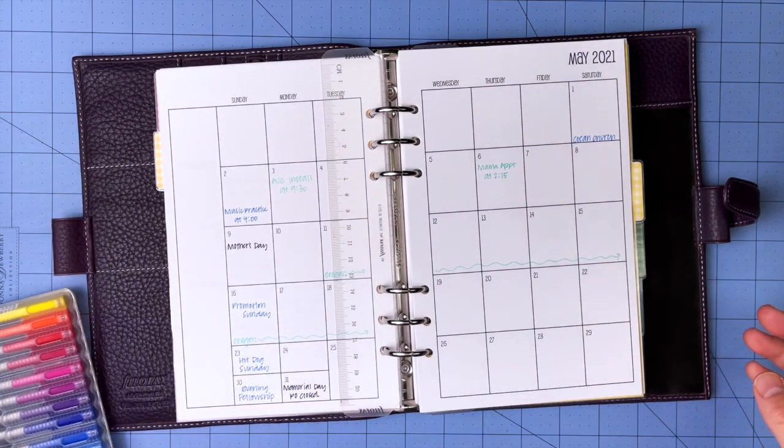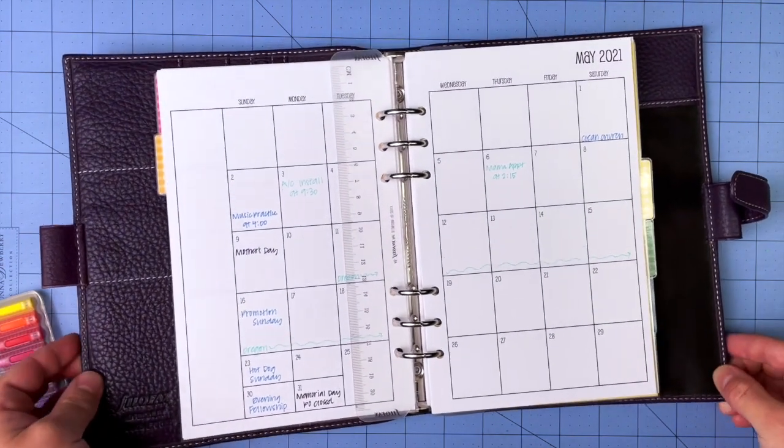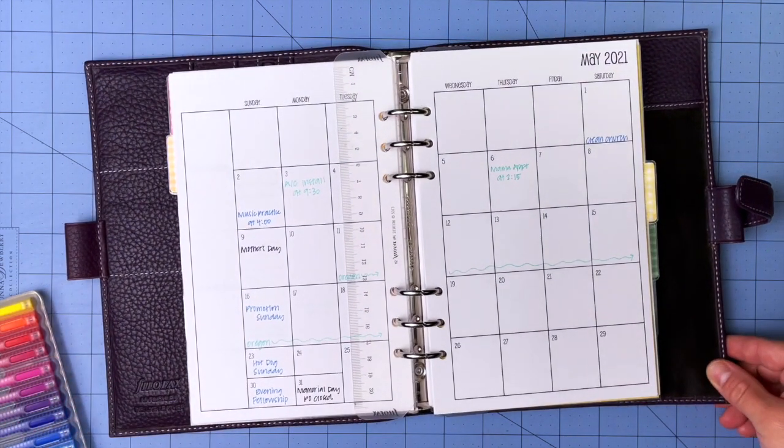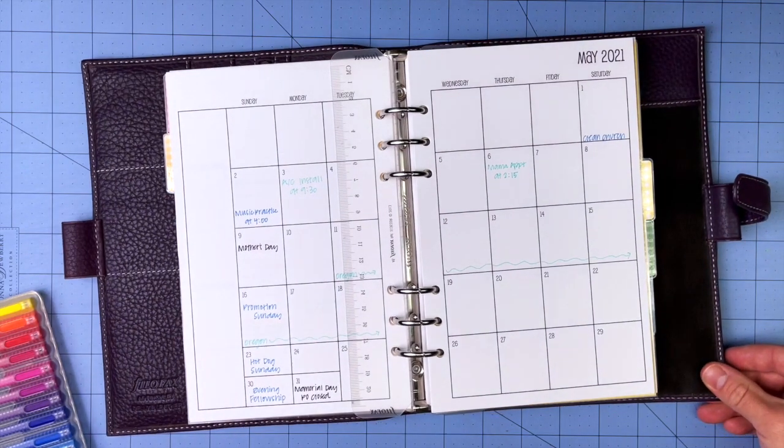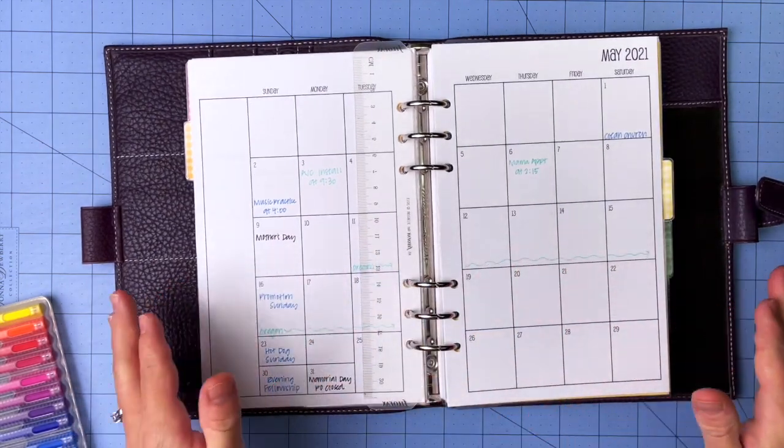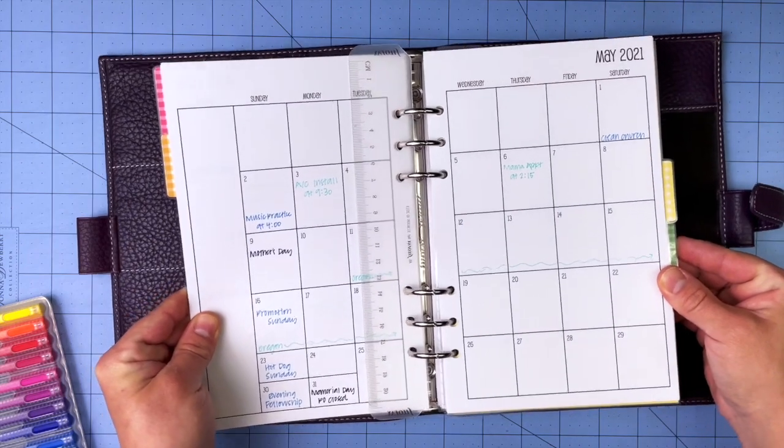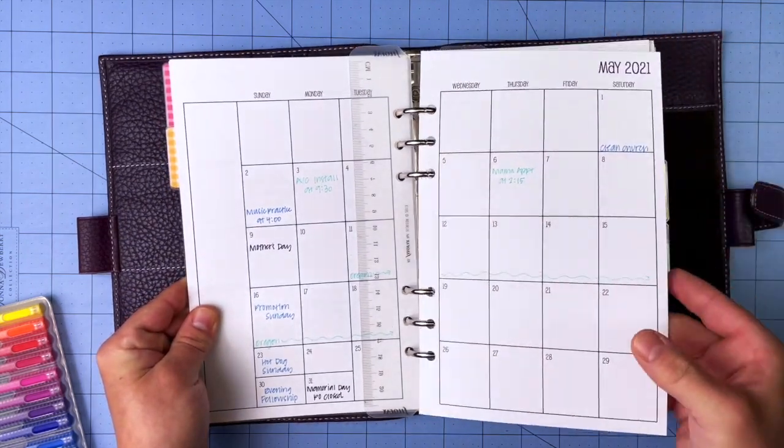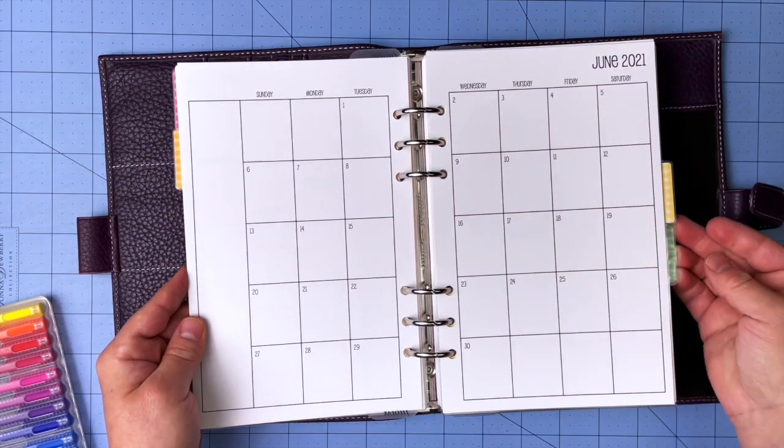Hey guys, this is Danielle from So Much Crafting, and I am back with a different kind of plan with me. I was going to do a weekly plan with me again this week, but my weekly plan with me's are pretty much the same every week. I'll probably go ahead and do one again next week after I've archived the month of May and moved into June. For this week, I thought I would go ahead and do a monthly plan with me for the month of June.